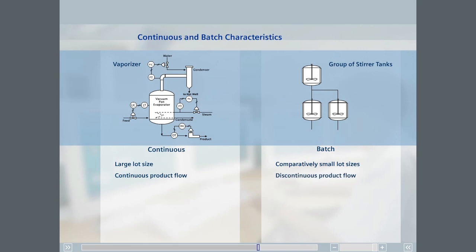A continuous process produces only one product. A batch process is often used to create several different products.